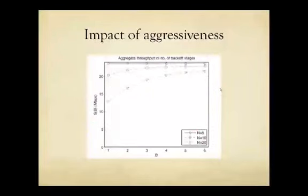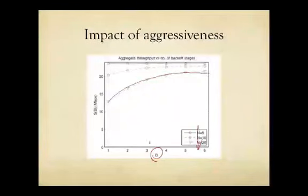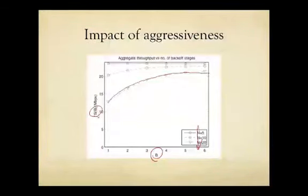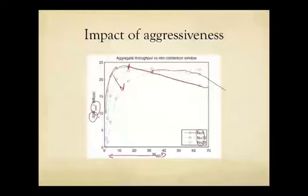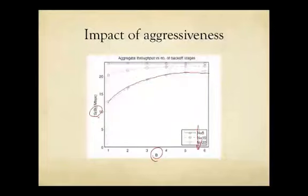Another way to look at aggressiveness is the maximum number of backoff stages that you allow. As you make B bigger, you tend to increase the average contention window size and become less aggressive. You'll see similar behavior here. As the crowd becomes bigger, the impact is more prominent. The throughput becomes bigger as you become less aggressive. However, the impact of B is less prominent than the impact of Wmin.